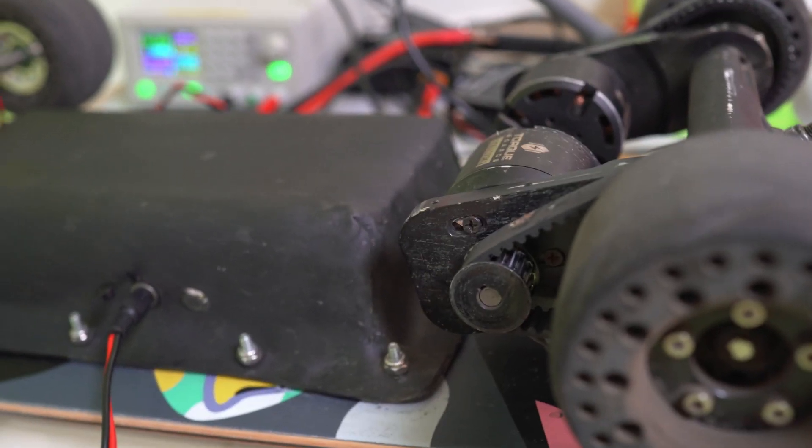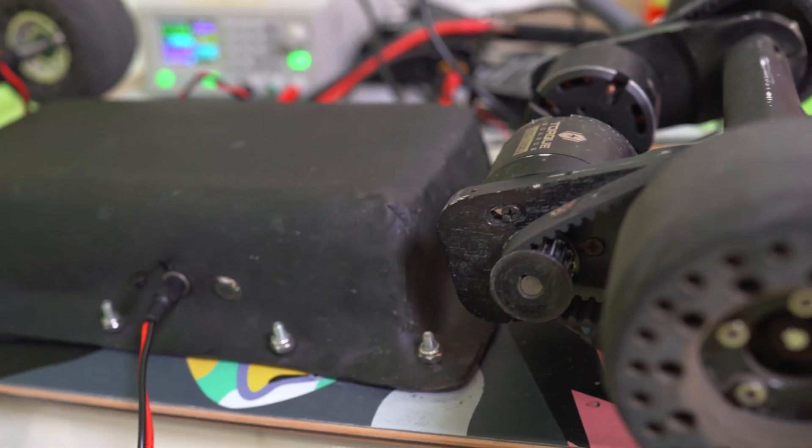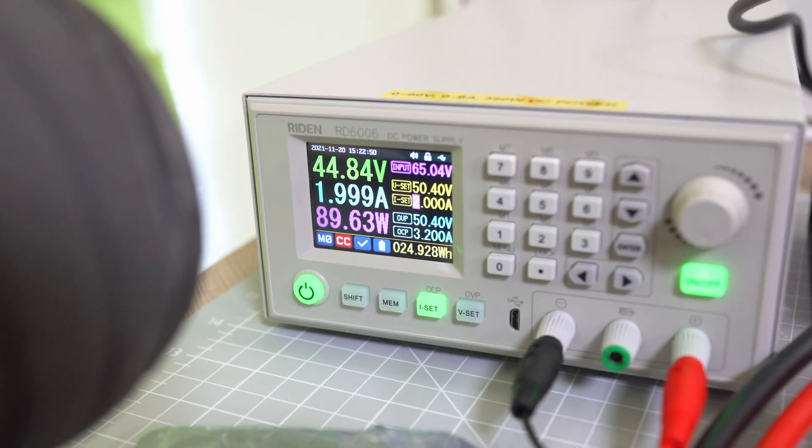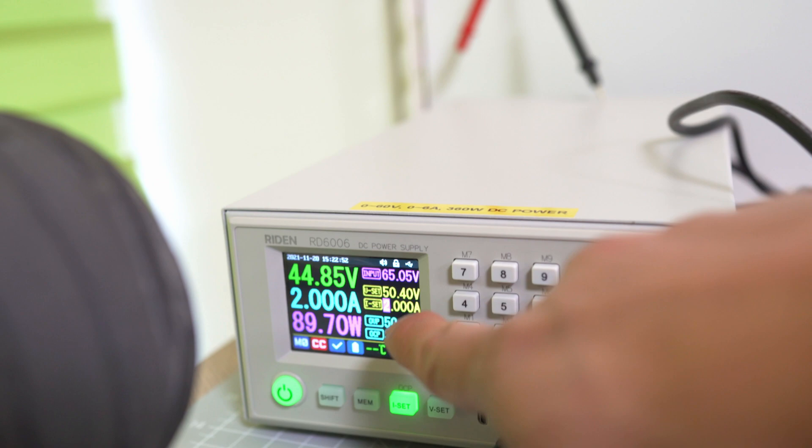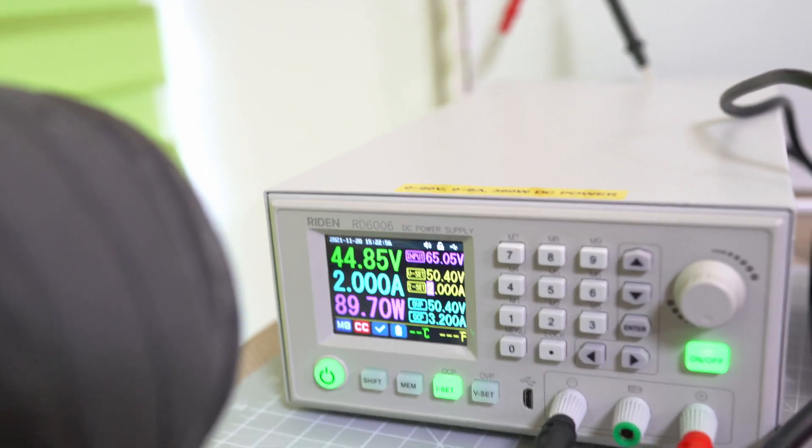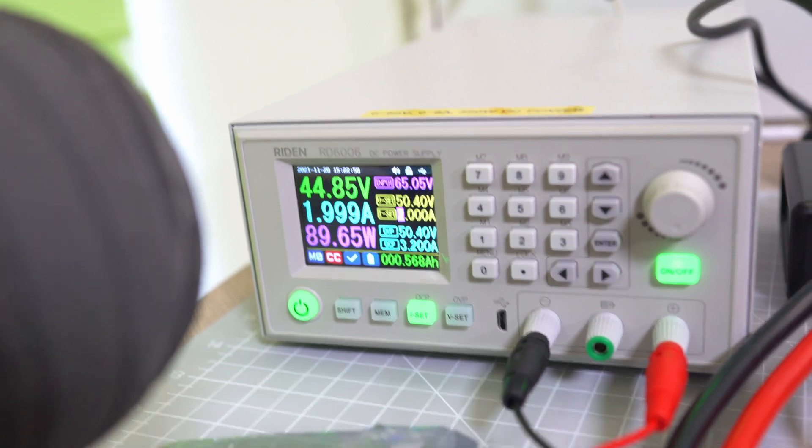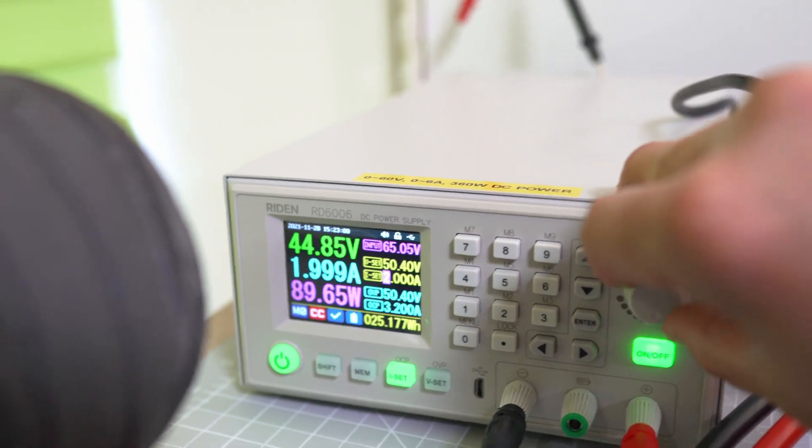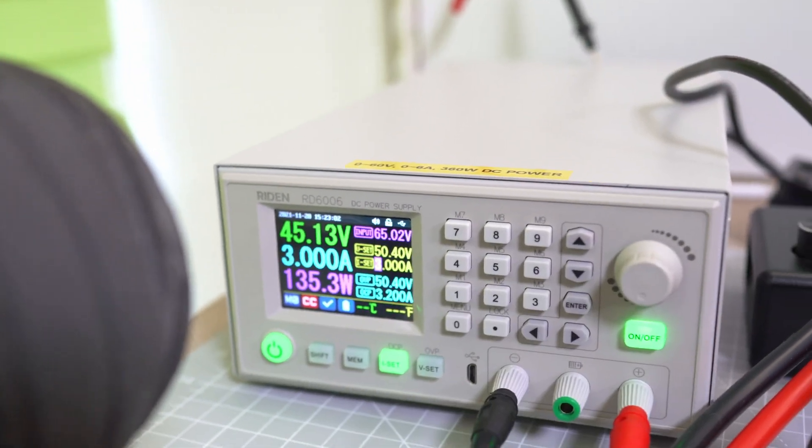It's got a Samsung 40T 12s 2p, so you'll want to charge this at 50.4 volts. You can see I've got it set at 50.4 volts. I could charge this at 4 amps fine, and I can do that easily just by changing the amps with the dial, which is great.